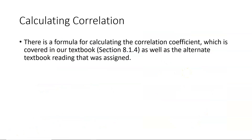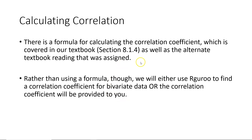Now that we have a numerical way of determining whether a scatterplot exhibits a linear relationship, the question is: how do we calculate that value? It turns out there is a formula for calculating the correlation coefficient, which is covered in our textbook as well as the alternate textbook reading. However, rather than using a formula, in this class we will either use our software to find a correlation coefficient for bivariate data, or I will provide the correlation coefficient to you.